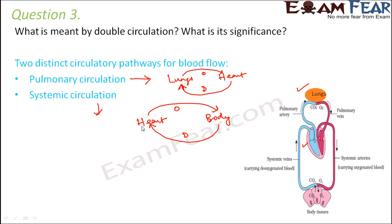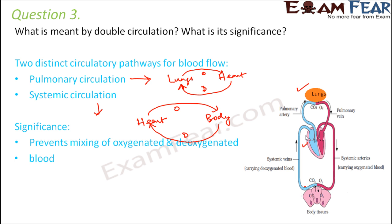The significance of double circulation is that it keeps oxygenated and deoxygenated blood quite distinct. There is no mixing of the two. Inside the heart, oxygenated and deoxygenated blood are in separate chambers, and the right auricles and ventricles are separated from each other by the inter-auricular or inter-ventricular septum. So double circulation prevents mixing of oxygenated and deoxygenated blood.